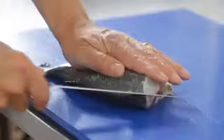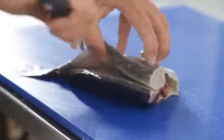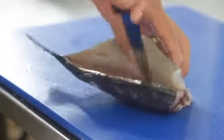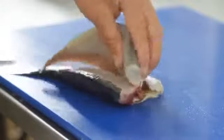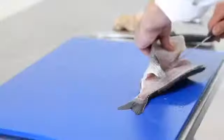Using the backbone as a guide, go from head to tail, releasing the fillet. Free off the ribs, split the rest of the tail, and release the fillet.